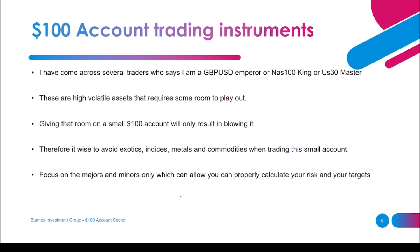What instruments do we trade on a small account? I've come across traders who say they are a GBP/USD empire or a NAS 100 king — I'm here to tell you that is rubbish. These are highly volatile assets that require room to play out. If you buy NAS 100 and put a very tight stop loss, you are likely to be taken out before the market goes in your direction. On a small account, widening the stop loss to the right amount will only result in blowing it.